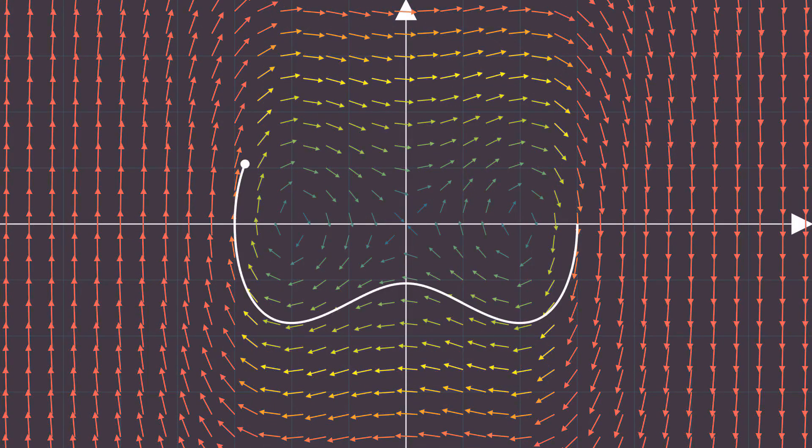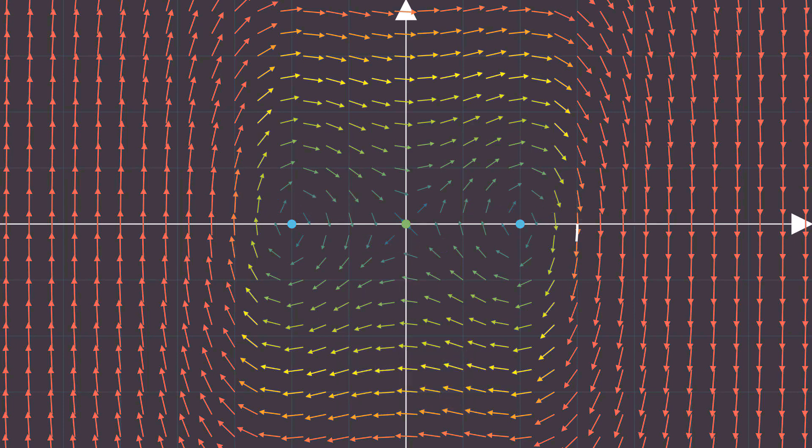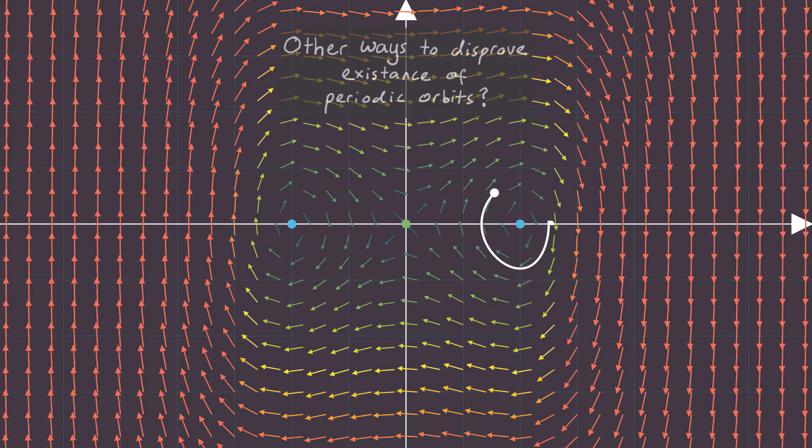We also talked about index theory, where we proved that a periodic orbit can only ever exist if the net index of the fixed points inside the orbit sum to plus one. This global information is very useful, but it doesn't give us everything we'd like to know. It turns out that there are other ways to also disprove the existence of periodic orbits. One of these methods is called the Bendixson criterion, and that's what we're going to talk about today.